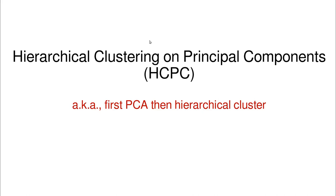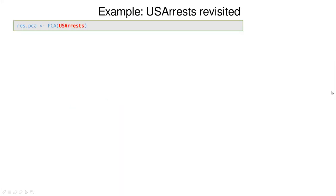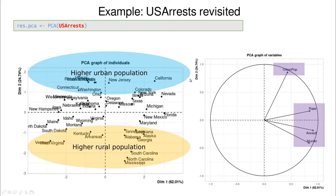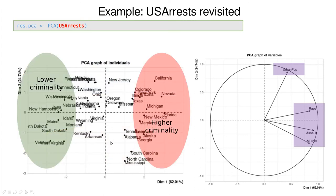Finally, HCPC — hierarchical clustering on principal components — is a fancy name for first computing principal components and then performing hierarchical clustering. Going back to the USA arrests dataset used in the clustering videos, we have some states clustered together and we can see a projection of that. Instead of doing clustering and then projecting to visualize, we do the opposite: first project into dimensions, then cluster. Urban population is highly correlated with the second principal component, while rape, assault, and murder are highly correlated with the first dimension. States scoring high on PC2 have higher urban population, and states scoring high on PC1 have higher criminality.